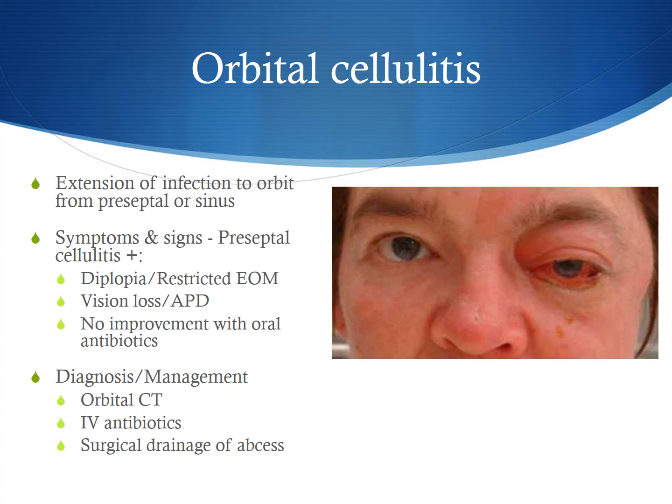Additional signs of orbital cellulitis include no improvement with oral antibiotics. If orbital cellulitis is suspected, diagnosis is made clinically as well as with an orbital CT. Management is typically with IV antibiotics as an inpatient, as well as sometimes surgical drainage of a localized abscess within the orbit.